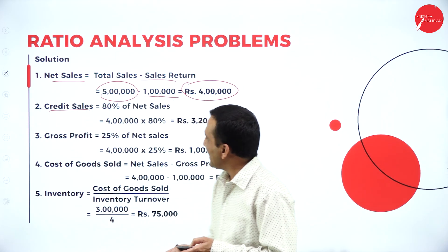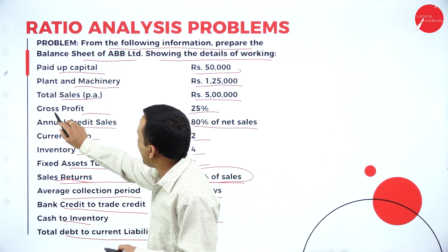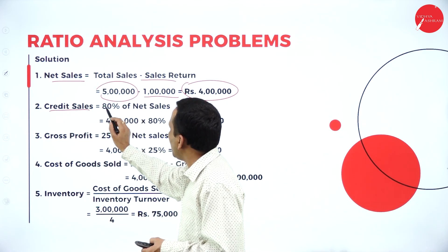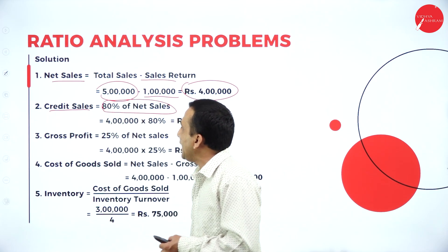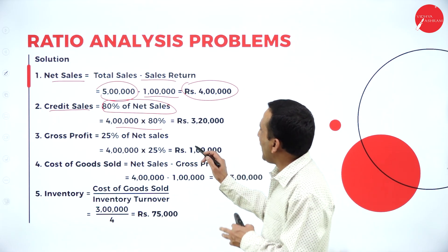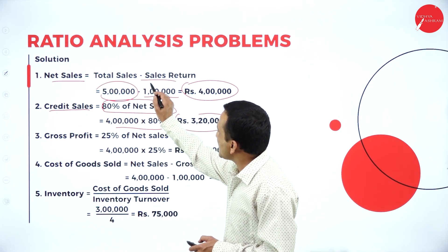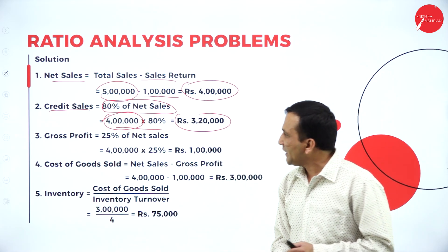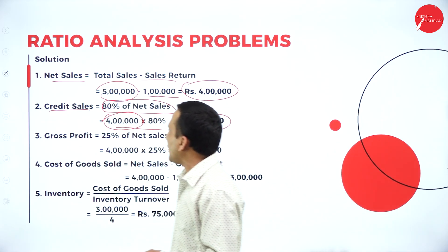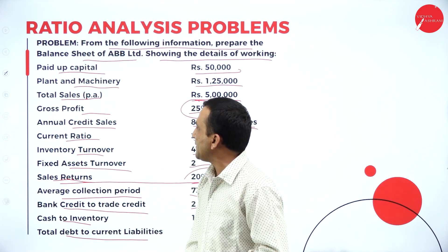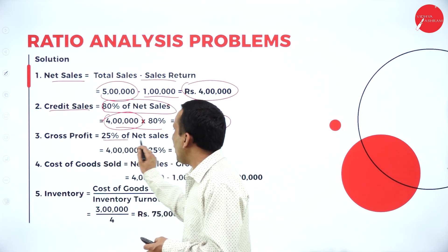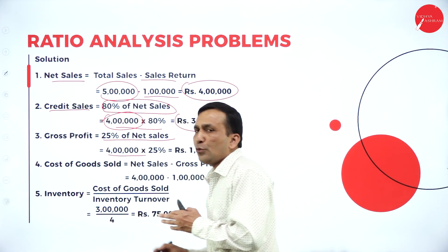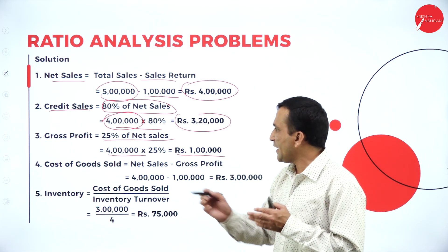Moving to credit sales: annual credit sales is 80% of net sales. From net sales of 4 lakhs, calculating 80% gives us 3,20,000. Now for gross profit: 25% is clearly specified on net sales. 4 lakhs into 25% gives gross profit of 1 lakh. Profit is always based on sales.